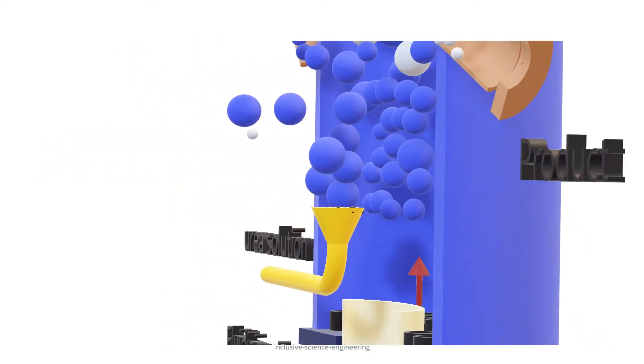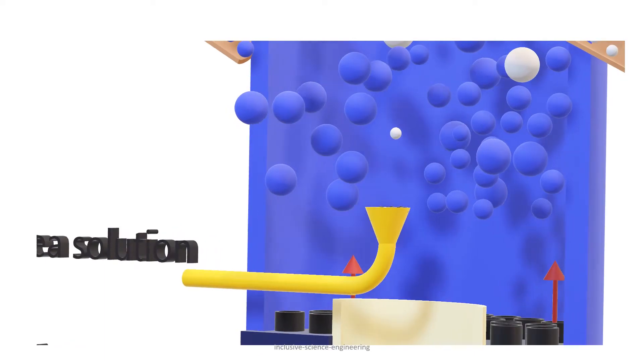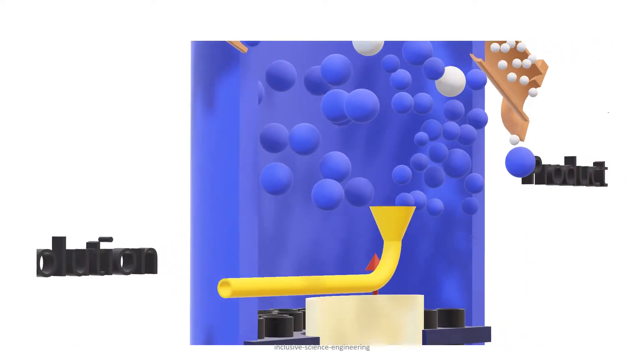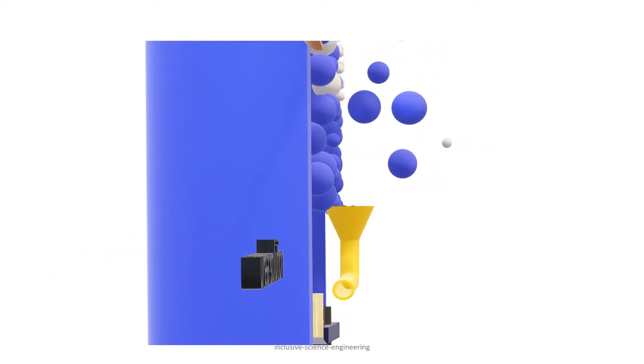Hi, let's learn about urea prilling using a spout fluid bed granulator. It is the equipment used to produce urea granules from the urea solution continuously. The equipment is a cylindrical vessel design.